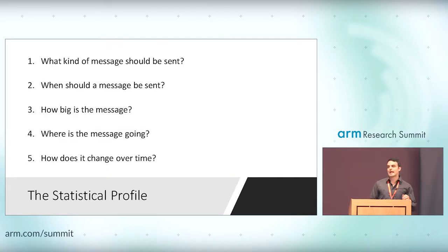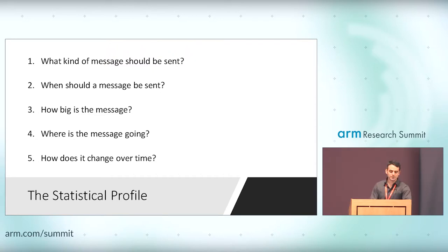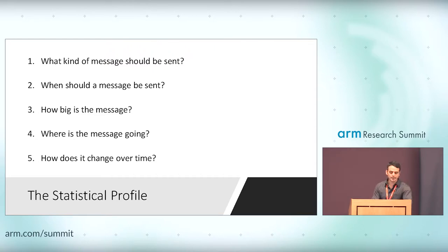What does a statistical profile need to capture? Let's answer a few questions. First, what kind of message should be sent? Writes and reads have very different impacts on memory and the system. Second, when should this message be sent? We should be able to track periods of idleness or bursty behavior. Third, how big is the message? Different messages have different packet sizes — a data packet is probably larger, a control packet smaller. And finally, where is the message going? The destination is based on the address, which determines which memory controller to route to.